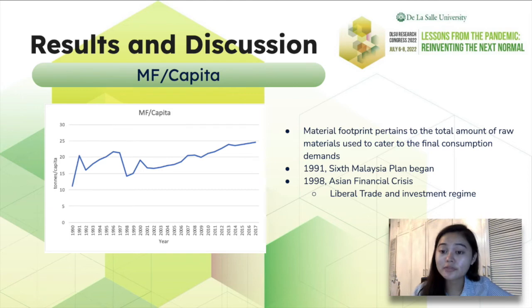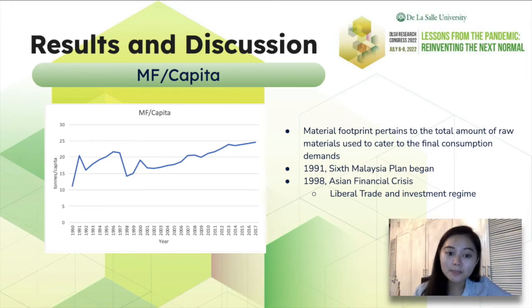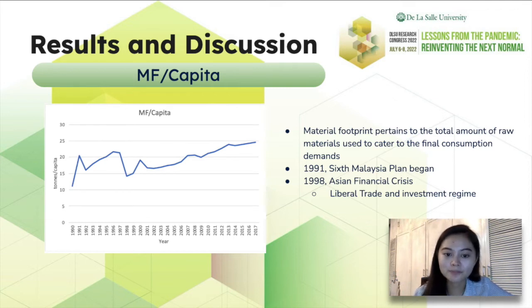From the definition of the United Nations, material footprint pertains to the total amount of raw materials used to cater to final consumption demands. The figure shows the increasing trend of the material footprint per capita of Malaysia. The Sixth Malaysia Plan, which is the first phase of the implementation of the second outlined prospective plan embodying the national development policy, began in 1991, explaining the spike in material footprint. It then shows a dip during the 1998 Asian financial crisis, where there was a drop in domestic demand and investment, leading to lower consumption. To counter this, the government promoted a liberal trade and investment regime that led to an increase in the following years.